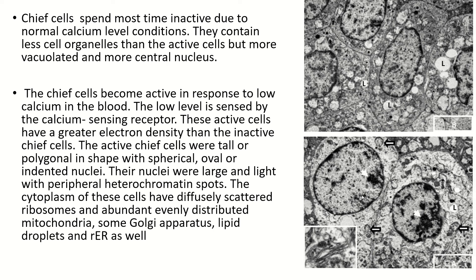The active chief cell responds to low calcium level in blood serum, and the low calcium level is sensed by the calcium sensing receptor. The active cell has a larger electron density than the inactive chief cell. This cell is tall and polygonal in shape with spherical and oval nuclei, and the peripheral portion of the nuclei contains heterochromatin. The cytoplasm of these cells contains scattered ribosomes, abundant evenly distributed mitochondria, some Golgi apparatus, lipid droplets, and rough endoplasmic reticulum.